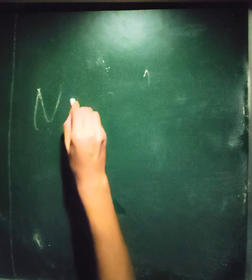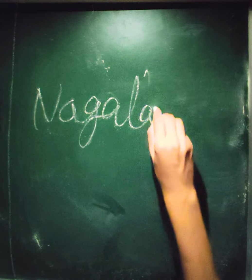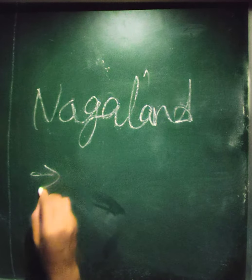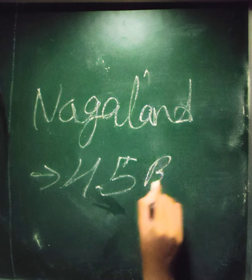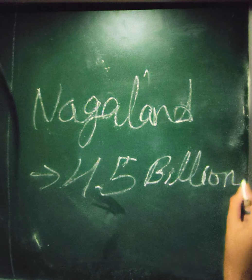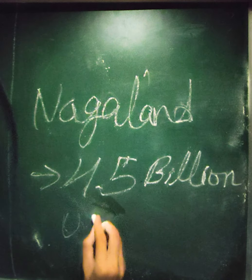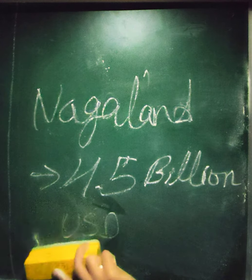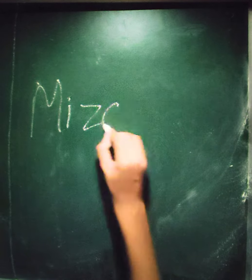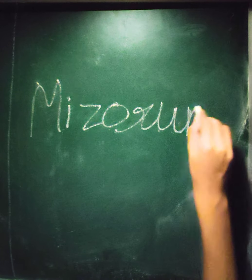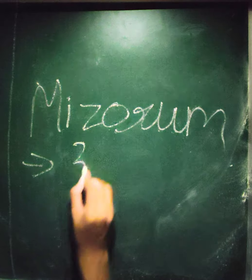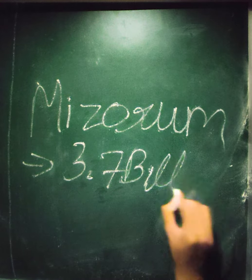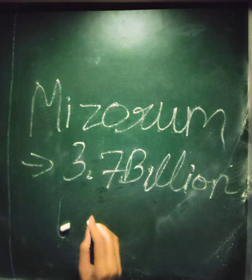The fourth state of the northeastern zone is Nagaland, with a GDP of 4.5 billion US dollars. The next state is Mizoram, with a GDP of 3.7 billion US dollars.